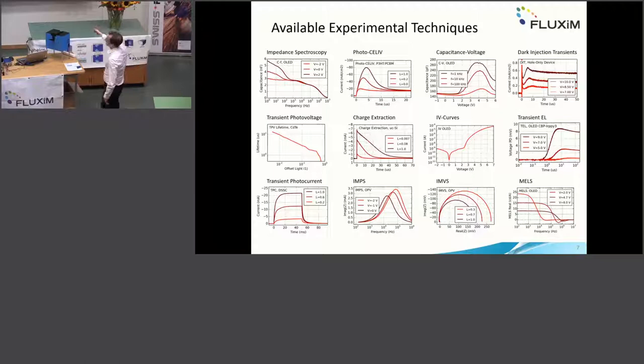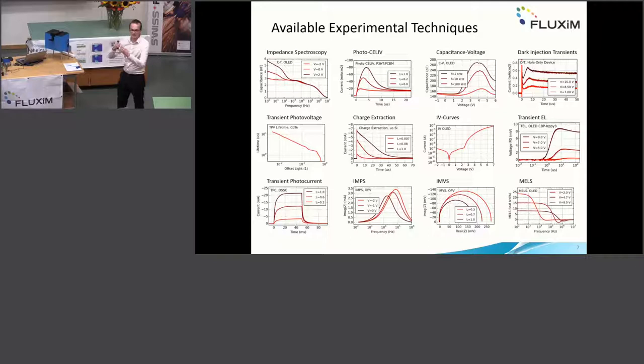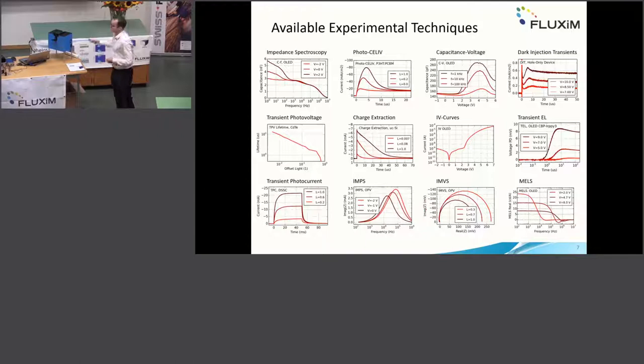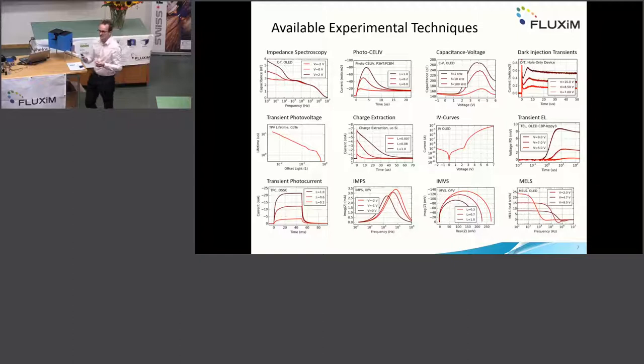It can measure charge extraction, with which you can measure the charge carrier density at open circuit voltage. It can do regular IV curves with different light intensities, or IV curves in the dark of an OLED. It can do transient electroluminescence — measuring the turn-on behavior of an OLED — and transient photocurrent for solar cells. It can also measure IMPS and IMVS.